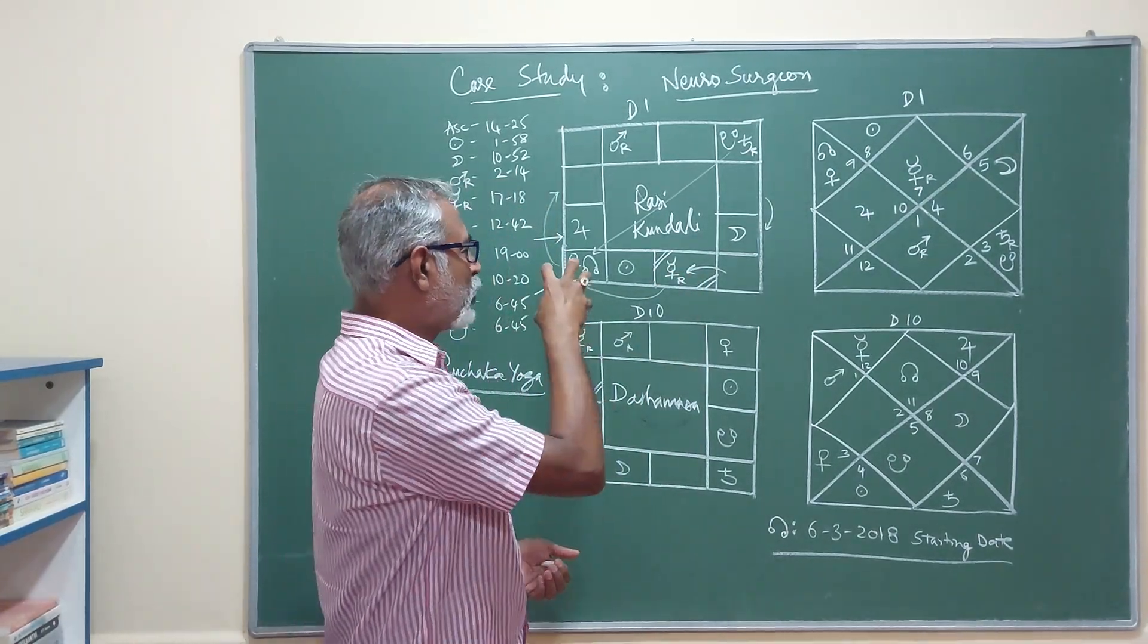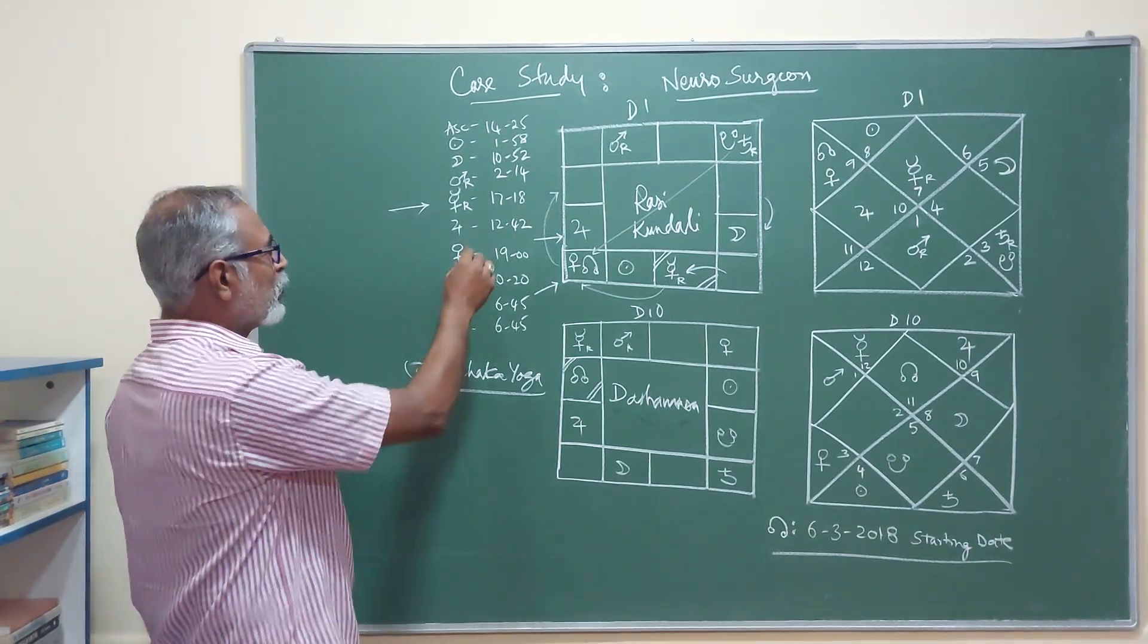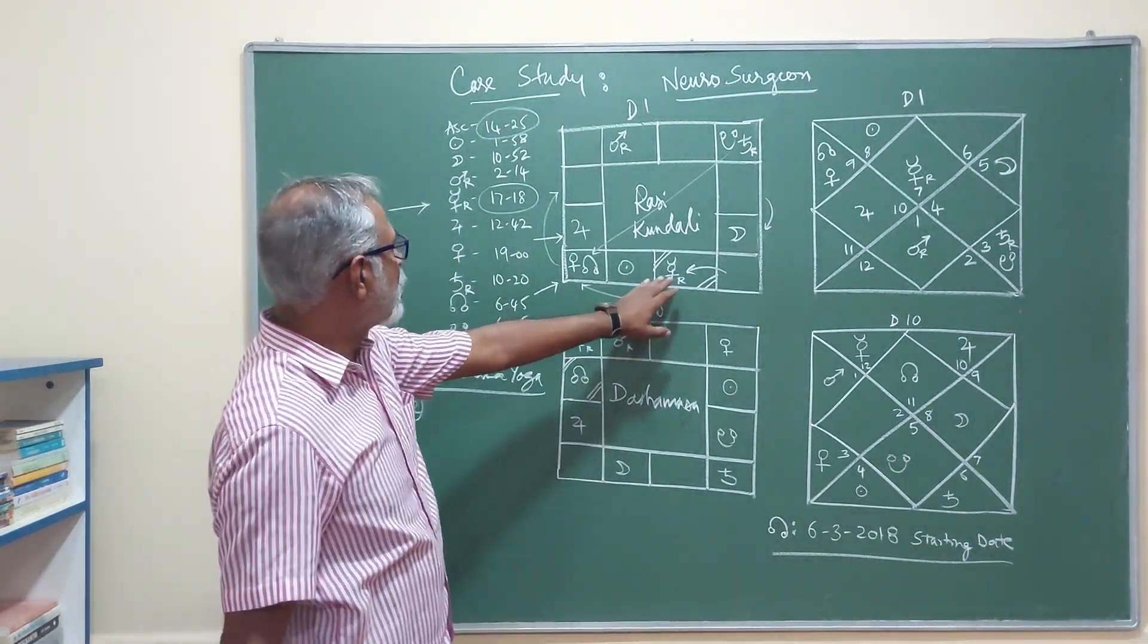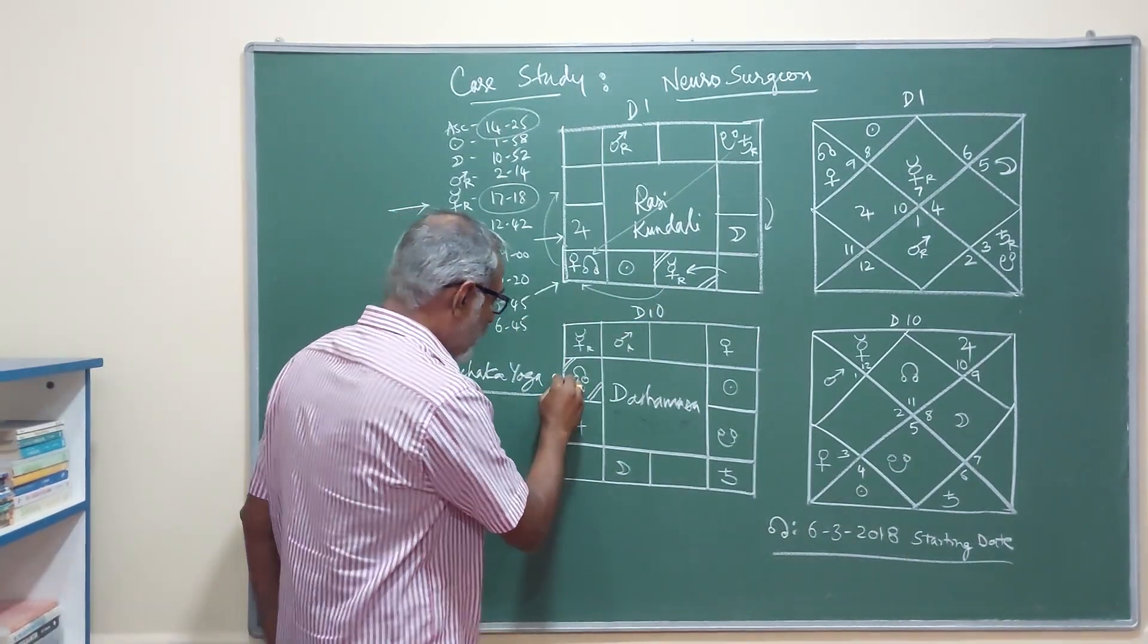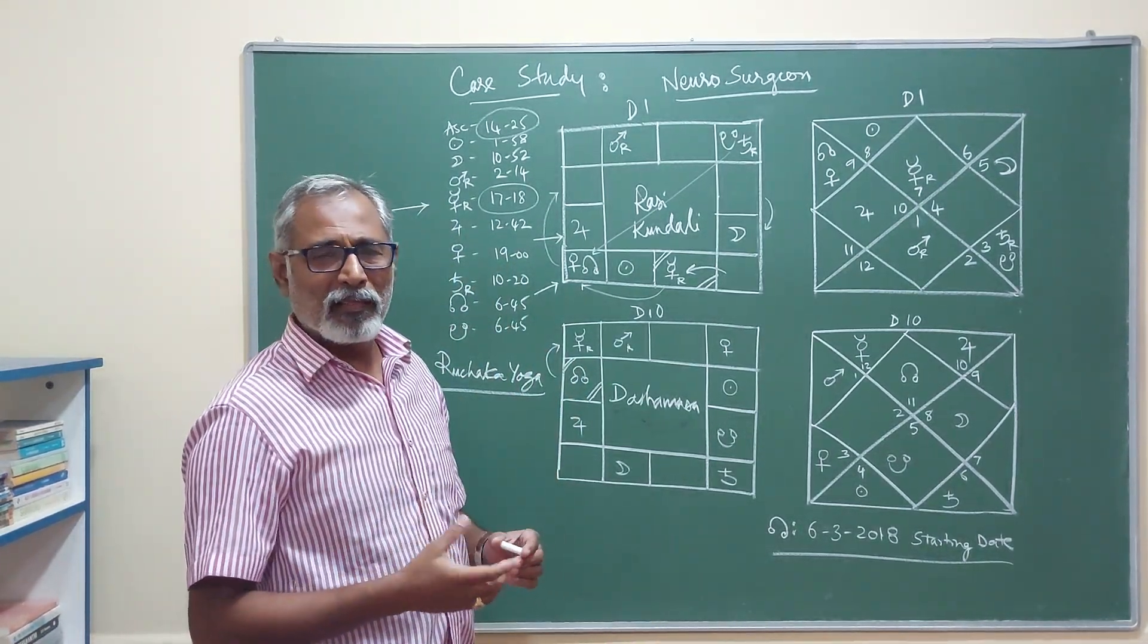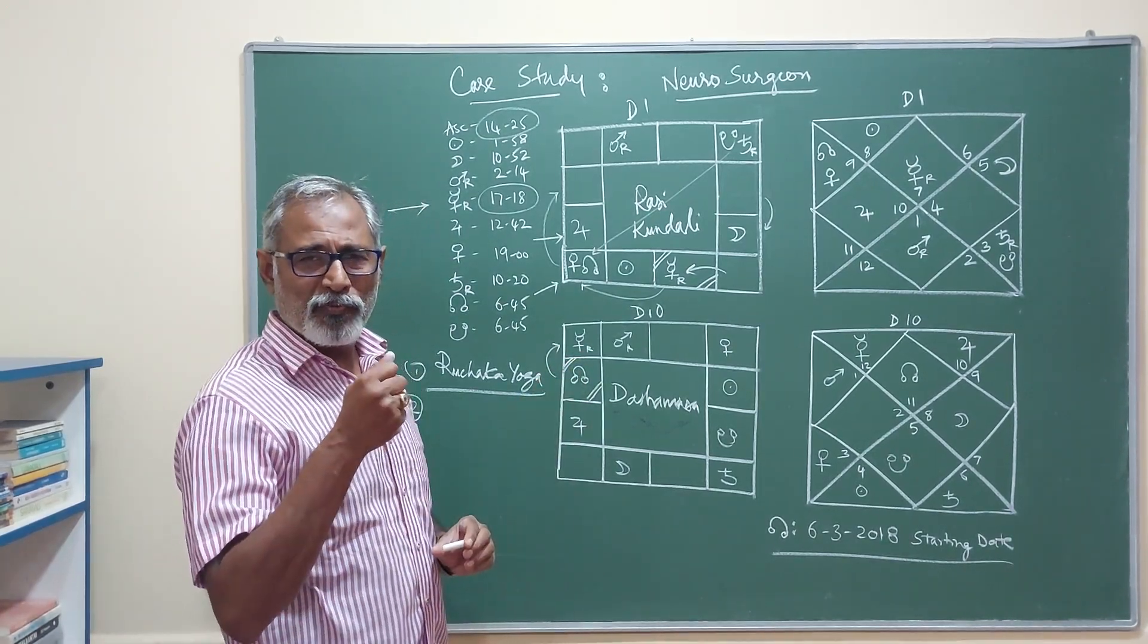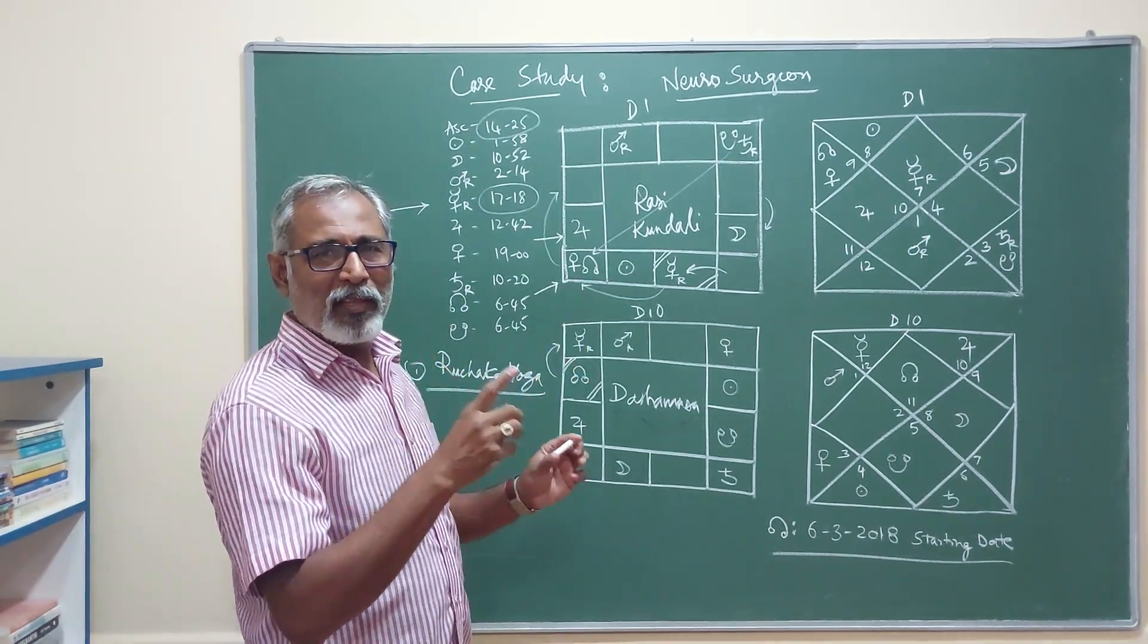Being the 9th lord and the 12th lord, Mercury is the one which has taken over the chart fully. If you see from the degrees, Mercury is at 17 degrees 18 minutes. The ascendant is at 14 degrees 25 minutes. This is a beautiful placement. Even in the dashamsha, you can see that Mercury is placed in the second house, the house of wealth. It is retrograde. Cheshtha Bala is very strong there. So the 12th house has made everything happen.